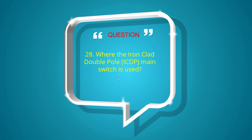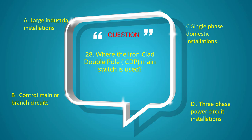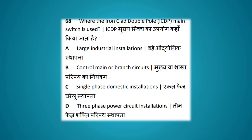Where is the ICDP (iron clad double pole) main switch used? Options: large industrial installation, control main or branch circuit, single-phase domestic installation, three-phase power circuit installation. The answer is single-phase domestic installation.